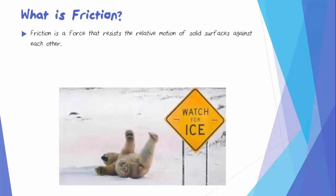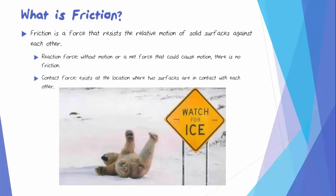Friction is a force that resists the relative motion of solid surfaces against each other. It's a reaction force. This means that without motion or a net force that could cause motion, there is no friction. It's also a contact force, which means it exists at the location where the two surfaces are in contact with each other.